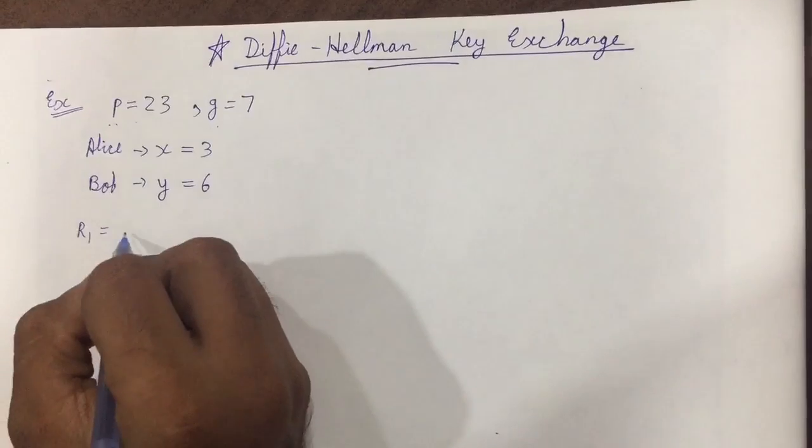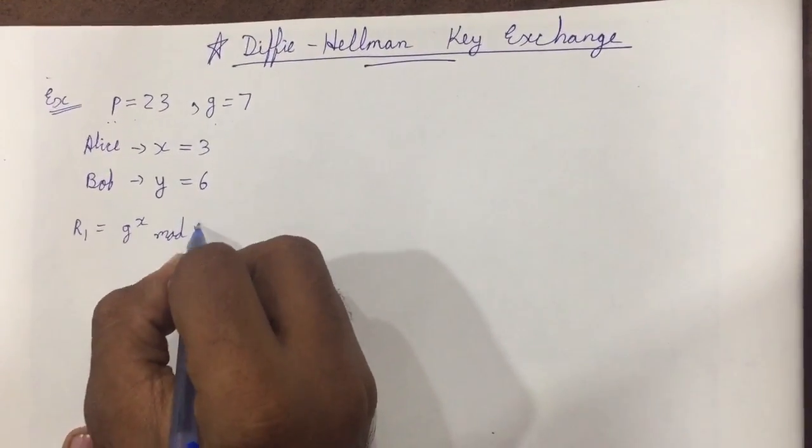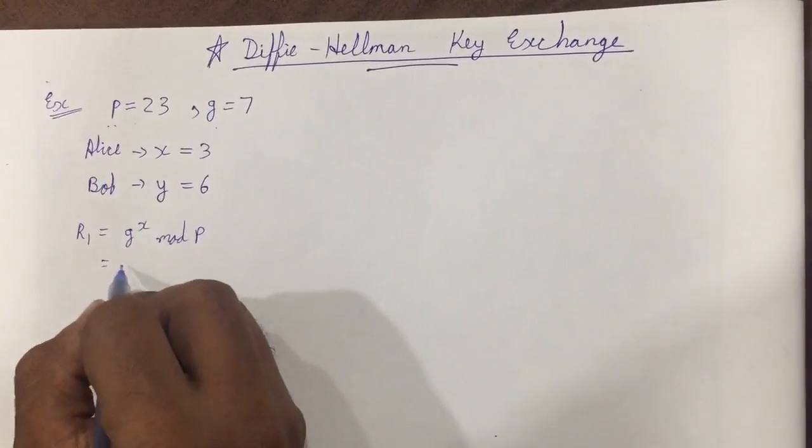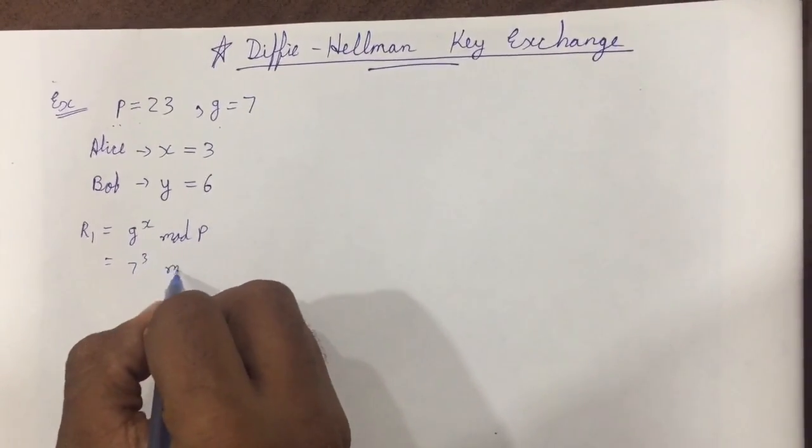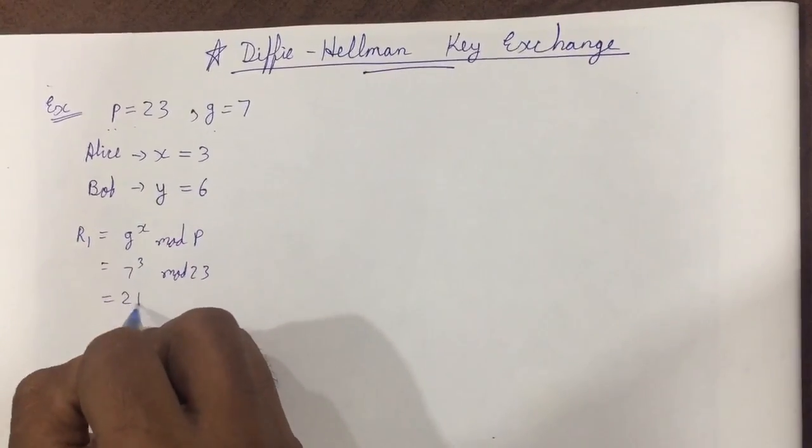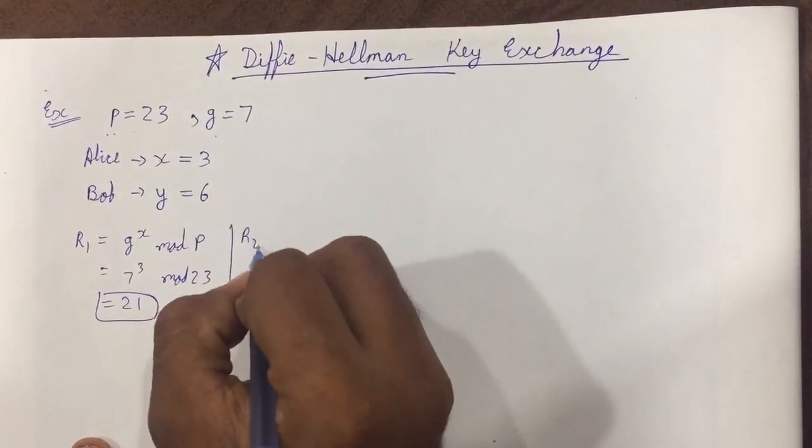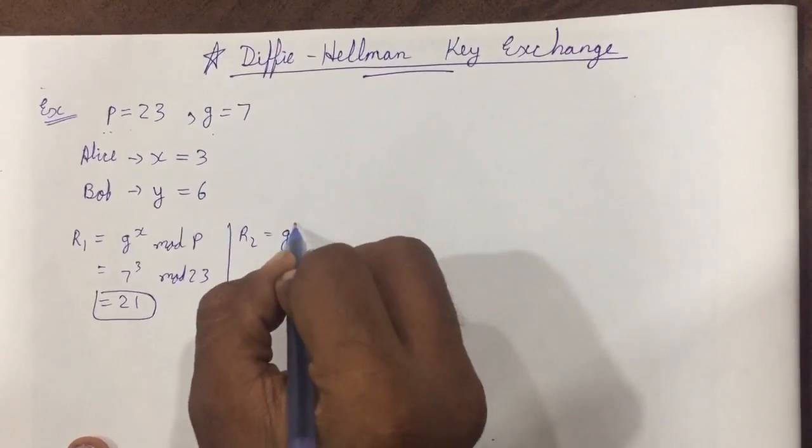R1 is equal to g raise to x mod p, which will be equal to 7 raise to 3 mod 23. It will provide us the answer as 21. If we try for Bob, R2, it will be g raise to y mod p.